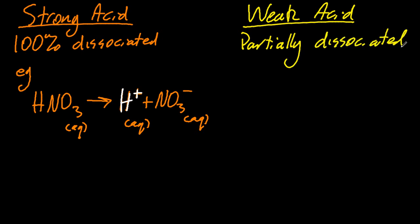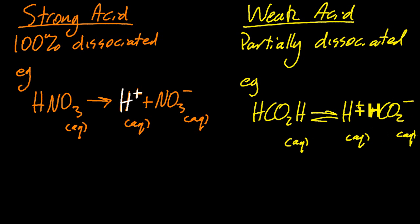Weak acid, well, that's partially dissociated, so put in an equilibrium sign. Methanoic acid only occasionally produces an H-plus ion. Almost all of it remains in the undissociated methanoic acid form.